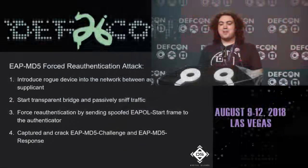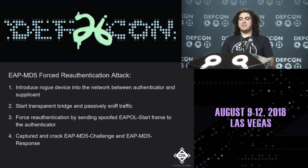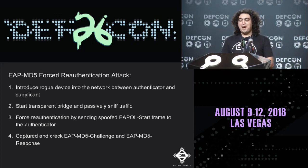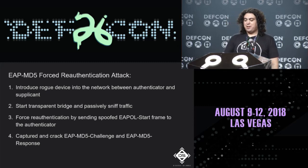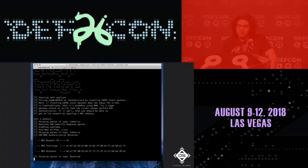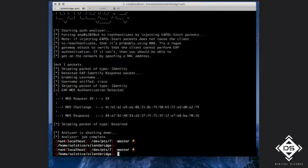The EAP-MD5 force re-authentication attack: introduce the rogue device between authenticator and supplicant, set up the bridge, start sniffing, then force re-authentication by sending a spoofed EAPOL start frame. This immediately captures the EAP-MD5 challenge and response. Demo shows repeatedly injecting EAPOL start frames using Scapy, which forces re-authentication very quickly. Running the tool immediately yields the request ID, challenge, response, and identity.